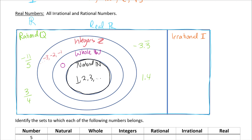Every rational number is also real. The irrational group includes examples like pi, root 2, e, and root 3 — these are irrational and also real. Every number we're going to be talking about today is real.